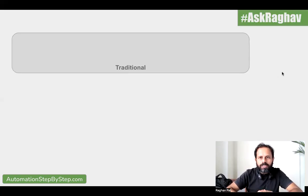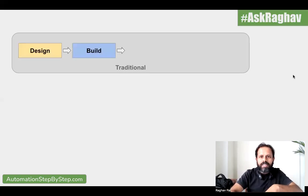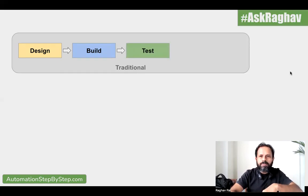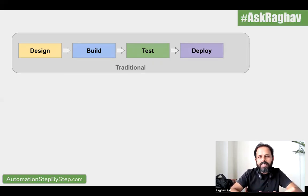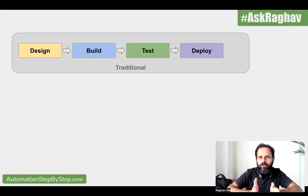If you look at the traditional project methodology, we used to have a design phase and a build phase where developers would do designing and coding and create the product, service, or feature. Then there was a testing phase where the QA and testing teams would test the software. And finally, there was a deployment phase. There can be phases before this like planning and after this like maintenance, but these are the major phases. This was a traditional project approach with different separate phases and separate teams for each phase.